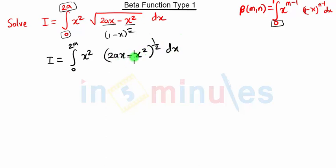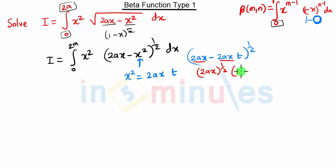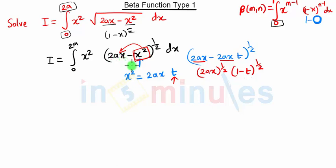Instead of 2ax minus x squared, we need a 1 minus x type term — that is, 1 minus some single variable. So what we are going to do is substitute x squared equal to 2ax into another variable t. If we substitute x squared equal to 2ax·t, then 2ax minus x squared becomes 2ax·t, and taking 2ax common we get 2ax the whole raised to half, into 1 minus t the whole raised to half. This is why we put x squared equal to 2ax·t.